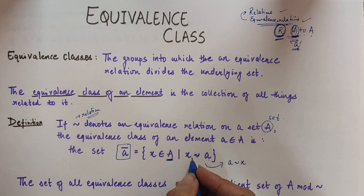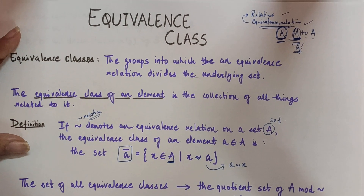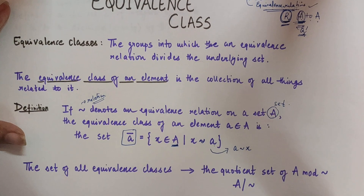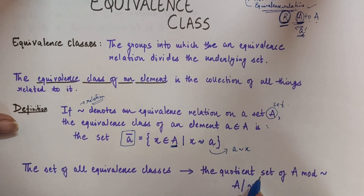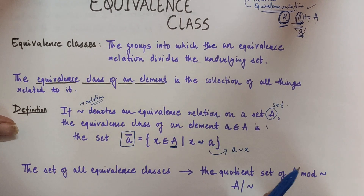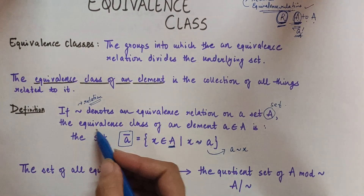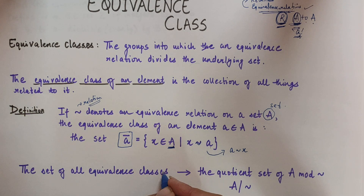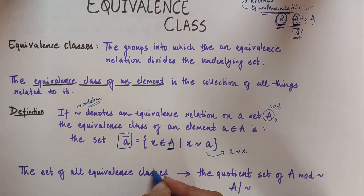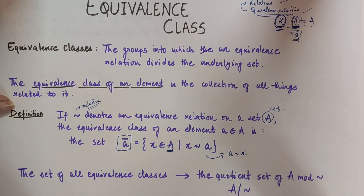We have another definition: the set of all equivalence classes is known as the quotient set, denoted A/~ or A mod R. So when we take different equivalence classes and club them together, we get the quotient set.